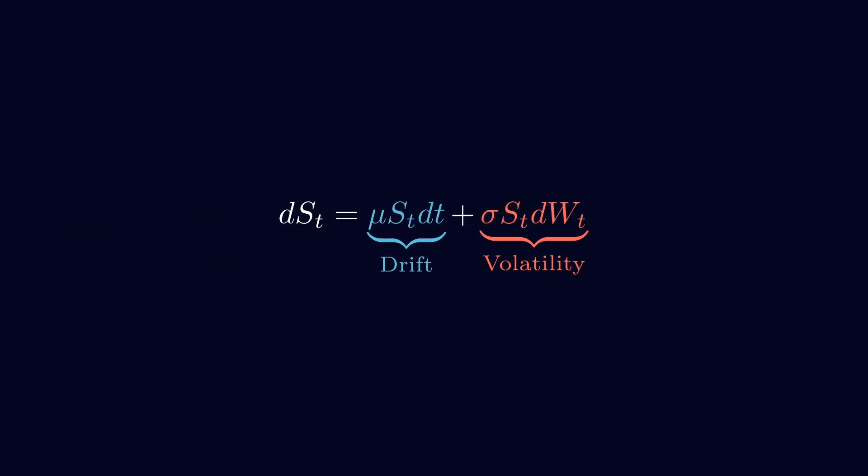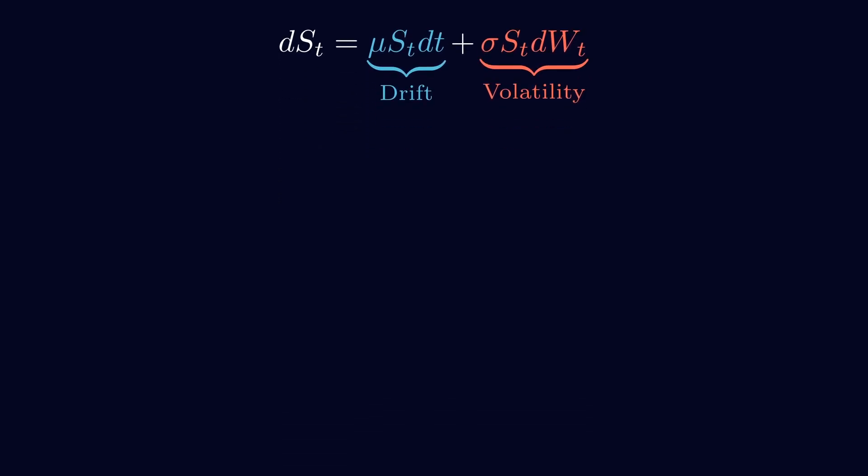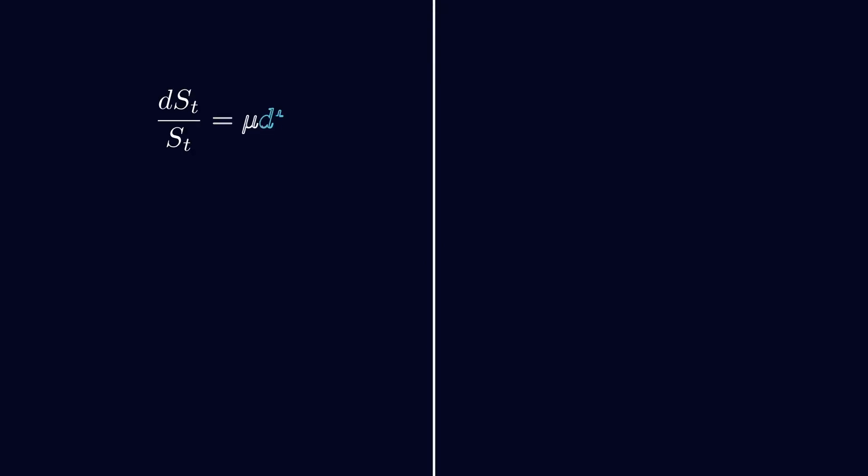We start by looking at the two parts of the model, the drift term and the volatility term. The drift is the easy piece, a classic differential equation. The problem is the red part, the volatility, because we can't solve differential equations directly when there's a Brownian motion term inside. First move, divide by S_T so all the S_T terms are on the left. Now, just to warm up, hide the red volatility term and keep only the drift.